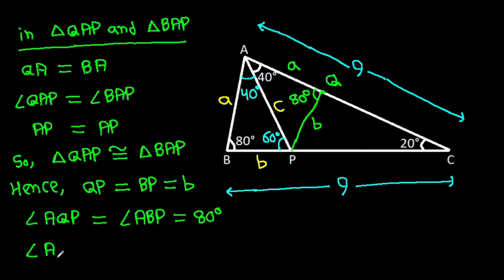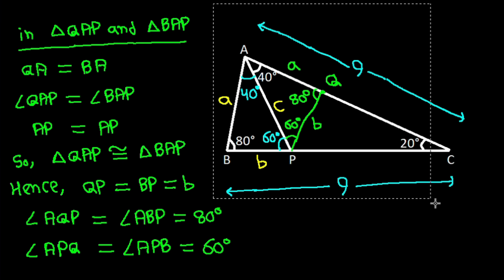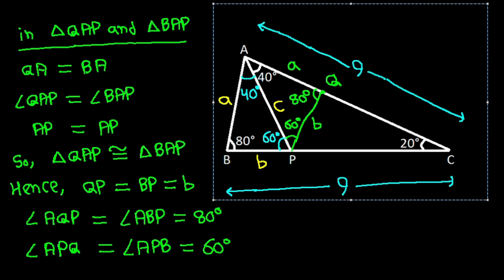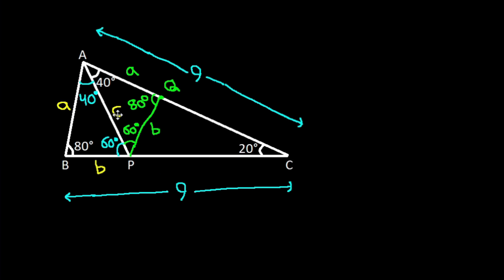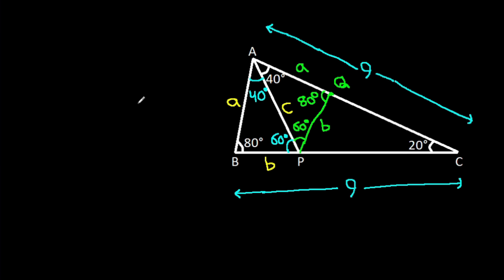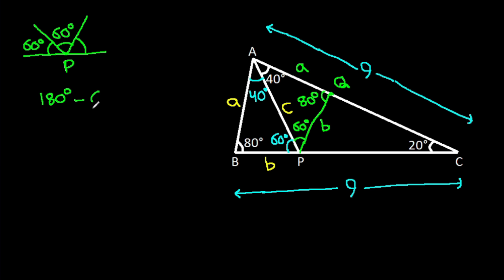Angle AQP equals angle ABP, that is 80 degrees. Angle APQ equals angle APB, that is 60 degrees. At point P, this angle is 60 degrees. So angle AQP will be 180 degrees minus 60 degrees minus 60 degrees, that will be 60 degrees.